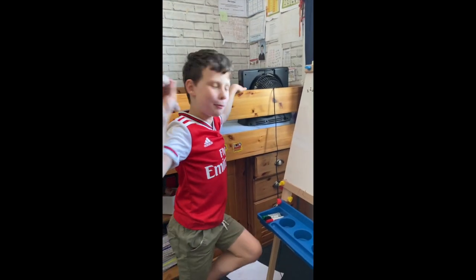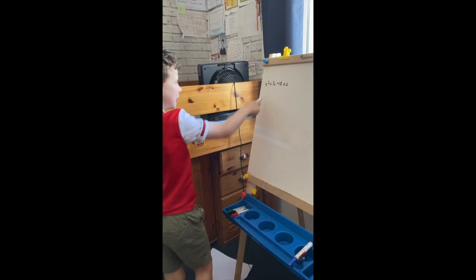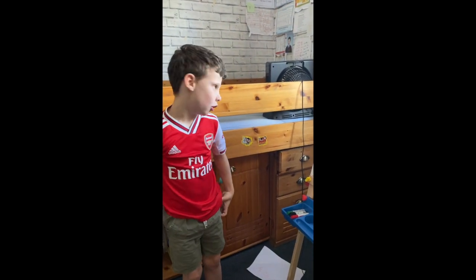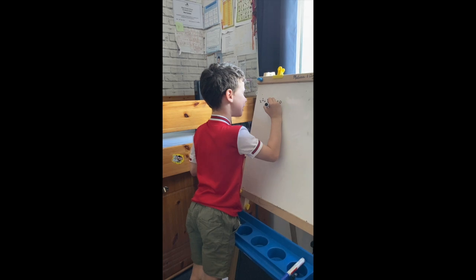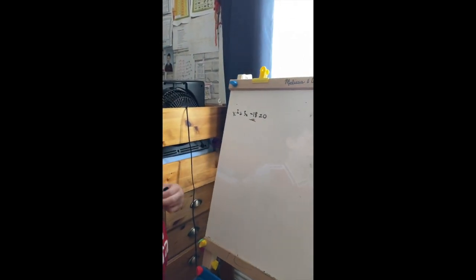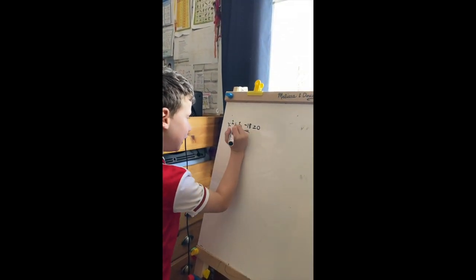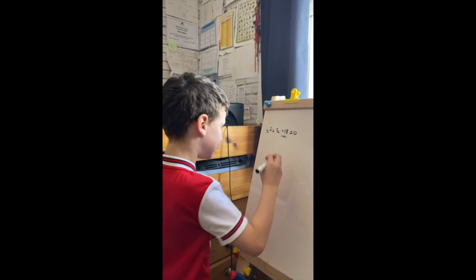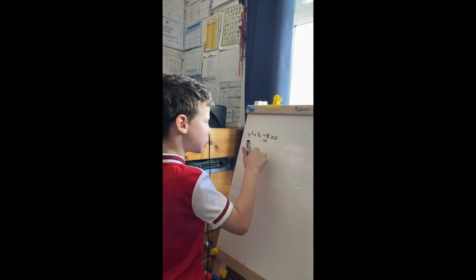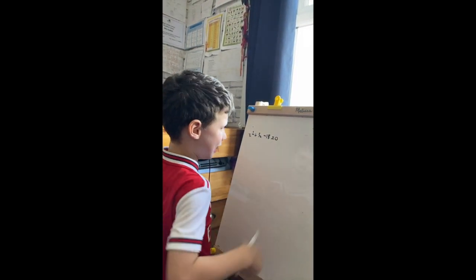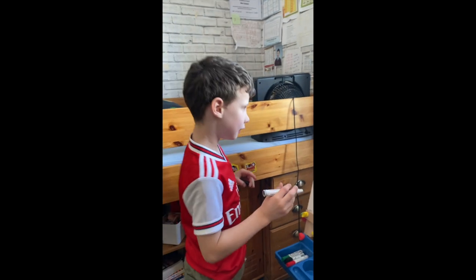Now we move on to something harder. You might think you need to find two numbers that multiply to make 18 and add to make 3, but no. Look at the sign — it's minus 18, and there's a plus in front, so this will be plus 3x. We need to find two numbers that multiply to make minus 18 and add to make minus 3.